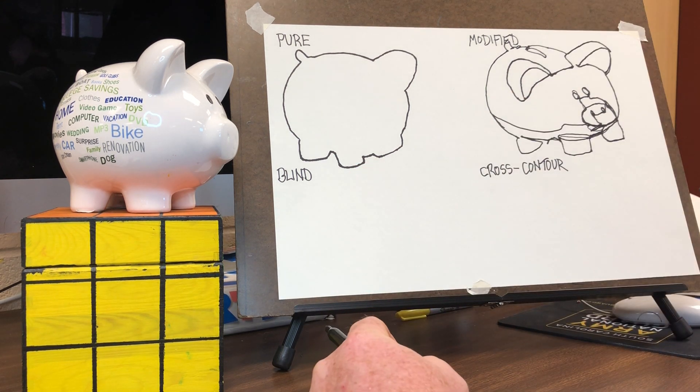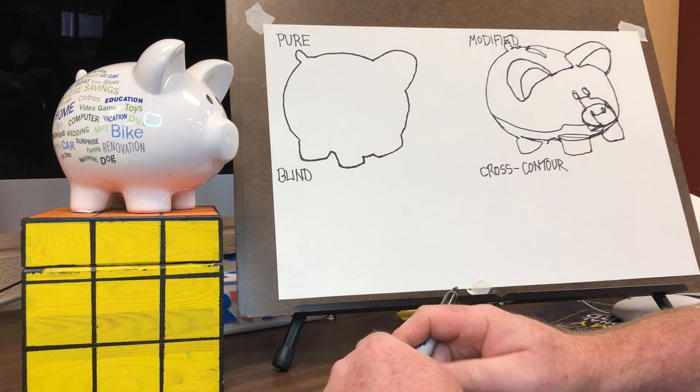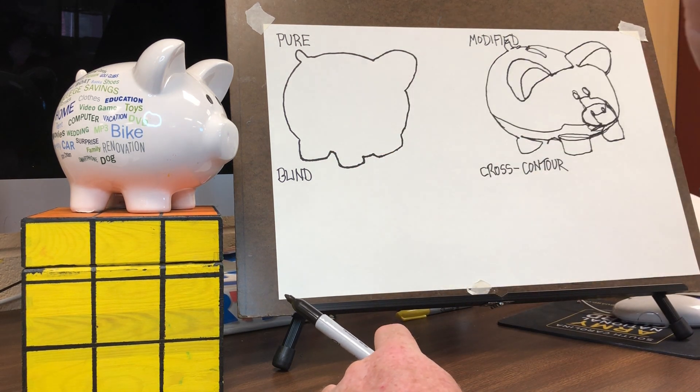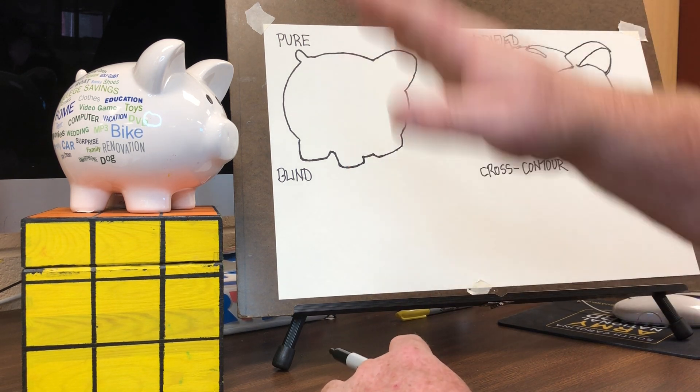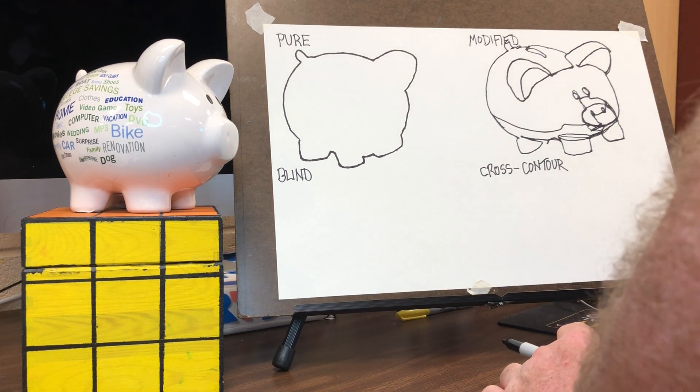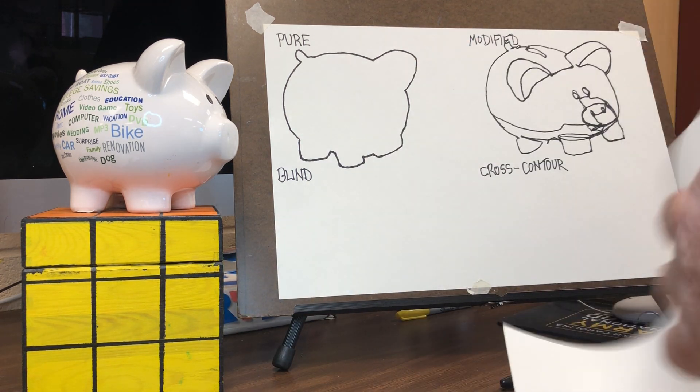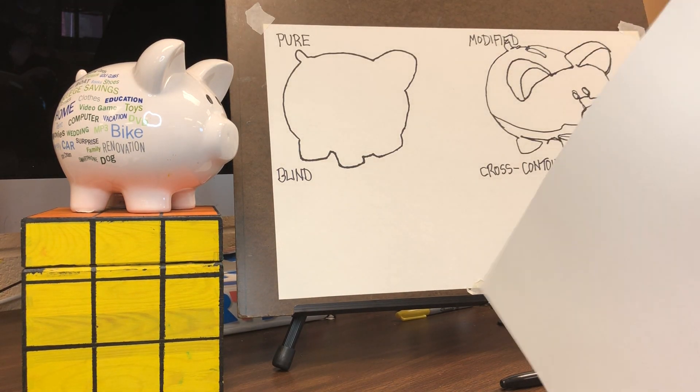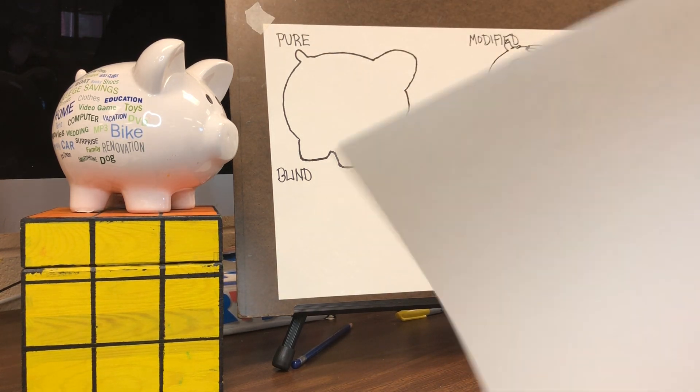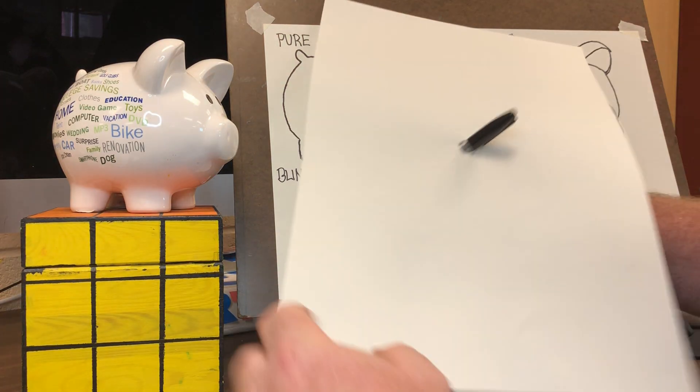Next I'm going to do blind. Now blind is one that a lot of students struggle with. And if you turn in a blind one and it looks that good, you did it wrong. Blind means you are not looking at the paper at all. You are only looking at your subject and your paper is going to be blocked. I'm going to go ahead and poke a hole in this piece of paper so I can do it blind. I encourage you to do the same thing. Cover up your work.